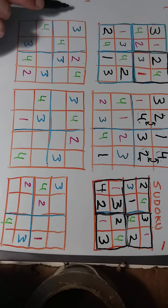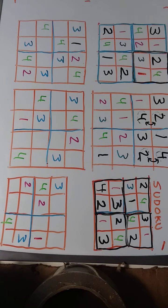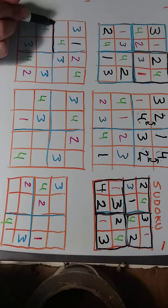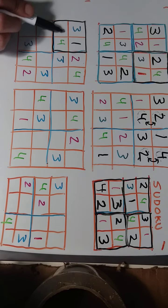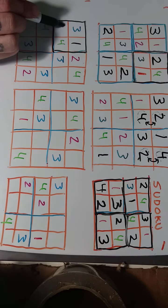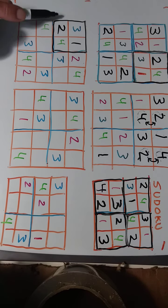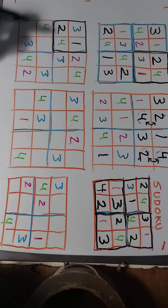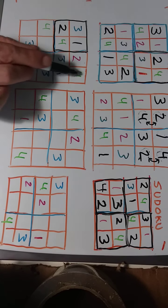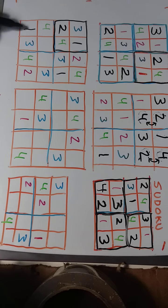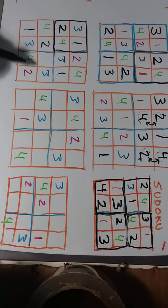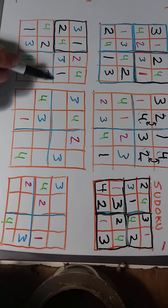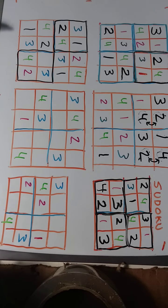We could start with the top row — we're missing only one number, which happens to be the one. Also in this top left box we're only missing one number, which is the two. Then we go to this row, this column, this column, and so on. We're missing a one here and a two in this column. Finally, the bottom right square is missing a one.